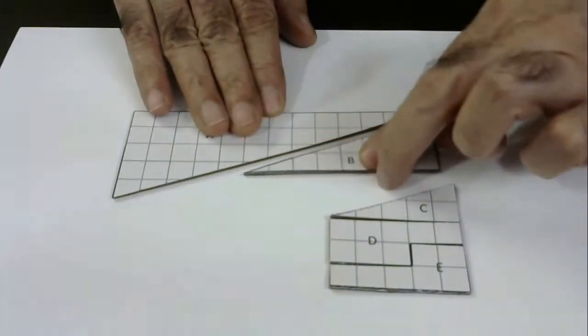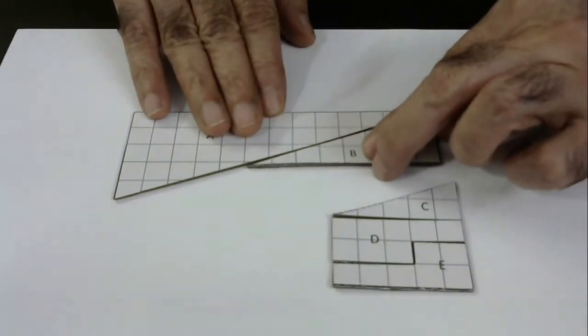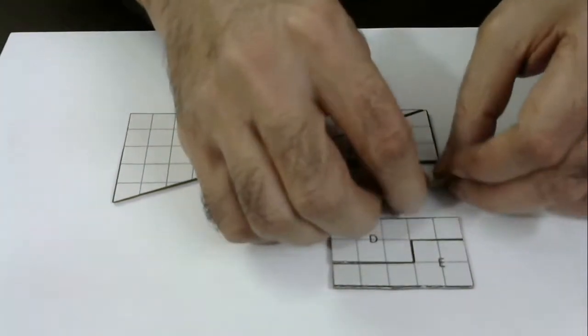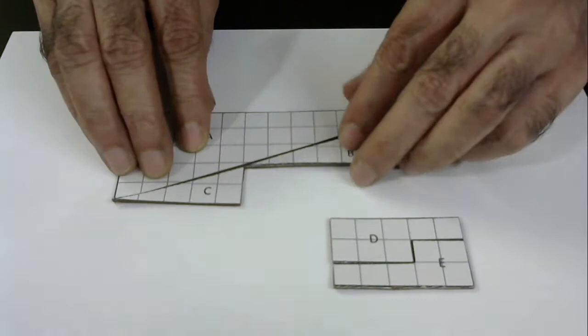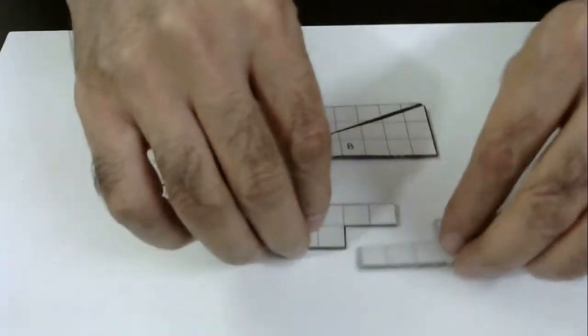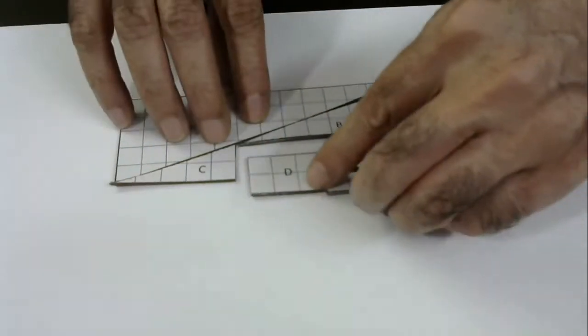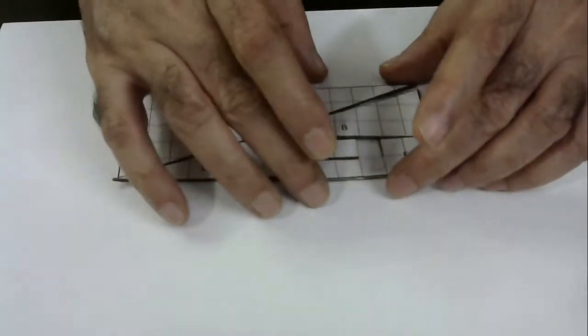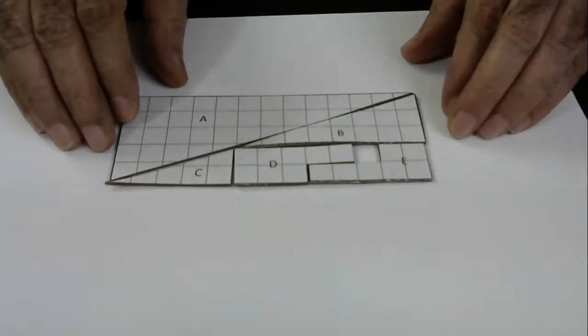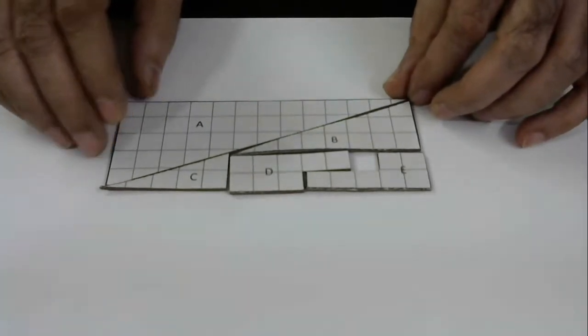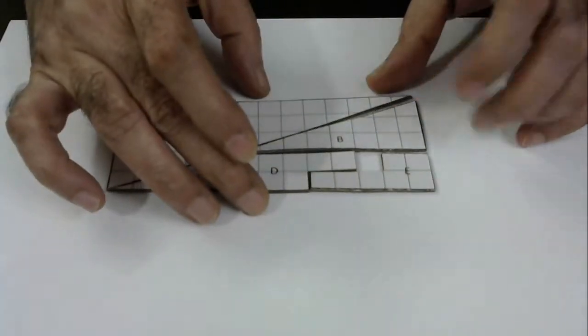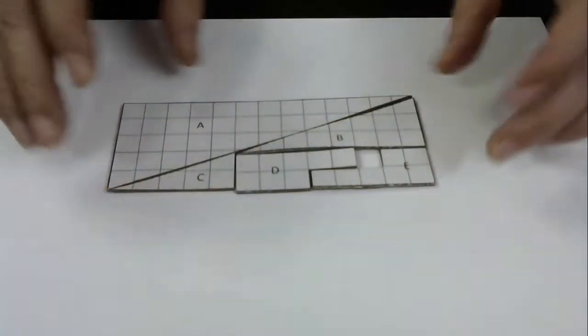I will just rearrange the same pieces so the area of all the pieces combined should remain the same because we are not removing or adding any pieces, but we have to do some magic within the same set of pieces. After we rearrange these pieces of this rectangle, let's see what has happened.